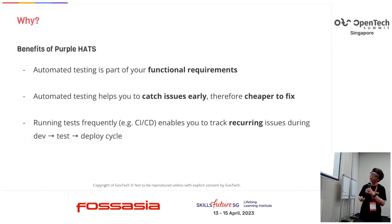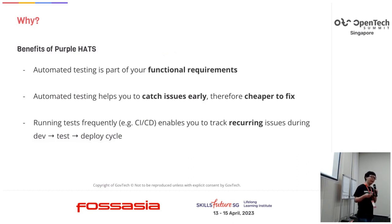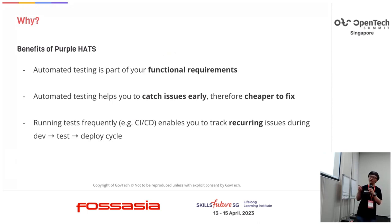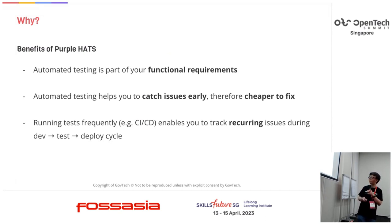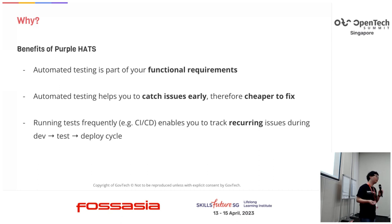Some of the benefits: automated testing helps you make accessibility part of your functional requirements. You can use it to catch accessibility issues early, and you can categorize those issues — such as color contrast problems, improper headings or lack of headings — and catch all these recurring issues systematically.